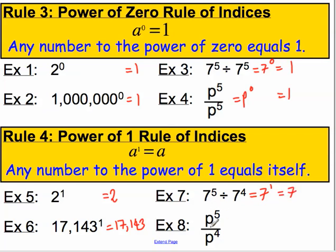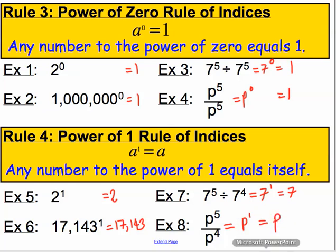P to the 5 over P to the 4 means P to the 5 divided by P to the 4, so that equals P to the 5 minus 4, or P to the 1, and P to the power of 1 is just equal to P.